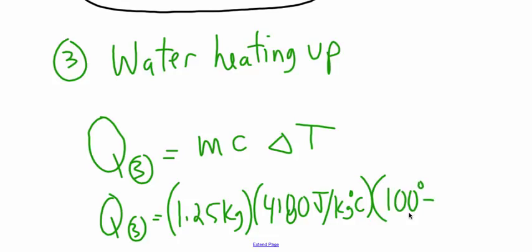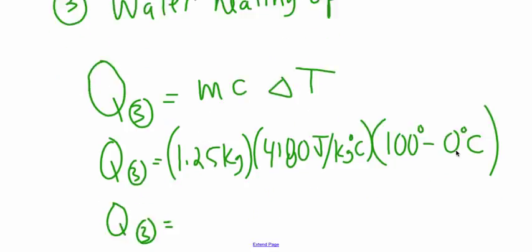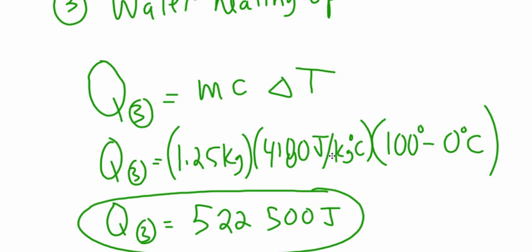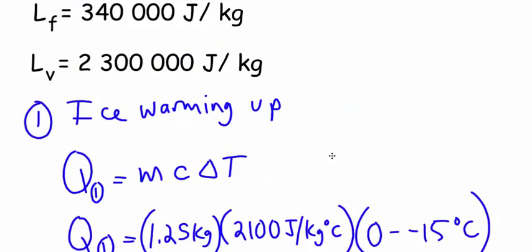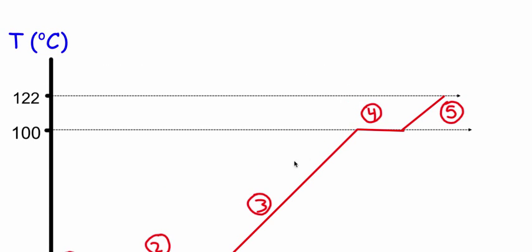Our mass is still 1.25 kilograms. Specific heat capacity of water is 4,180. And the delta T, it goes from zero to 100. So 100 minus zero. So if I want to take that little bit of water and make it boil, 522,500 joules of energy. So now all of our water is boiled. We've brought it up to this point right here.